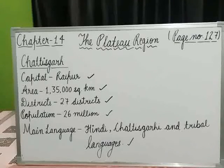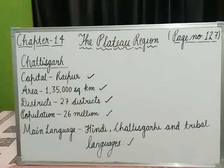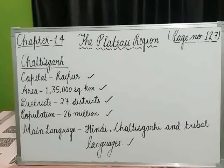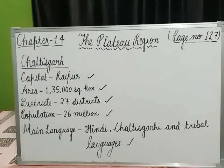Raipur is the capital of Chhattisgarh. Mahanadi is the most important river of the state. Chhattisgarh is surrounded by land from all sides, and River Mahanadi is the main river flowing through the state. Waterfalls like Chitrakur, Tirthagarh, and Mandava are located here and are famous waterfalls of the state.